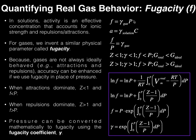We can rearrange the equation — fugacity equals fugacity coefficient times pressure — to give an alternate form where the fugacity coefficient is simply the fugacity divided by the pressure. In some cases you may be asked to simply calculate the fugacity: you would calculate the pressure using a gas equation (probably the ideal gas equation), either be given the fugacity coefficient or look it up in a table, multiply those two together, and you'd have your fugacity.